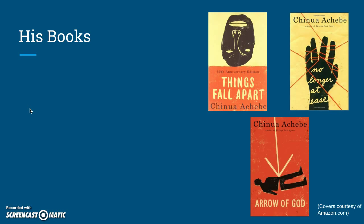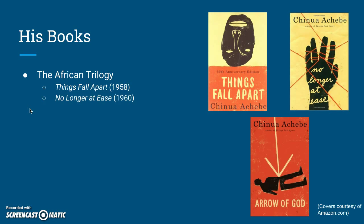Let's review some of the books that he wrote. He's most known for the African Trilogy, which are very definitive works when it comes to English language African fiction. The first book is Things Fall Apart, the book we read, published in 1958. The second book was No Longer at Ease, published in 1960. And the final book of the trilogy is Arrow of God, published in 1964. Both No Longer at Ease and Arrow of God are available in our classroom library.